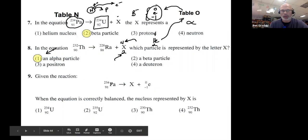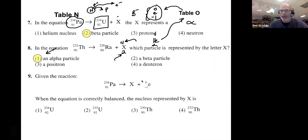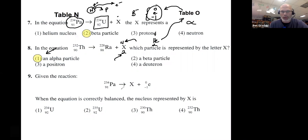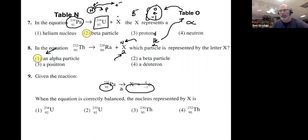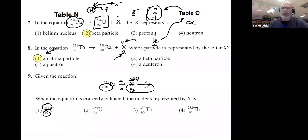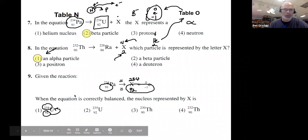Number nine: what's this particle? If palladium gives off a beta particle, what should the product be? We're going to have negative 1 plus what number equals the atomic number on the product side. That's going to be 92. And 0 plus what number is 234? That's 234. There's only one element with mass number 234 and atomic number 92 — and 92 is uranium. That's why choice one is the answer.